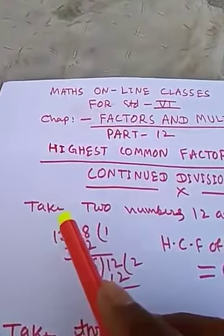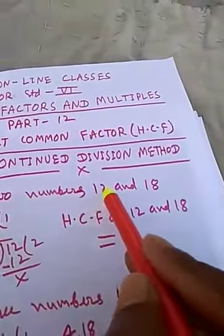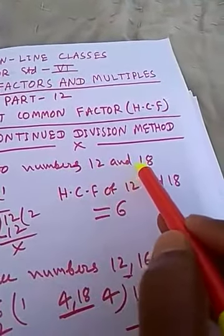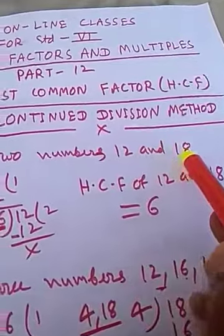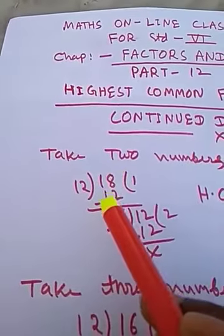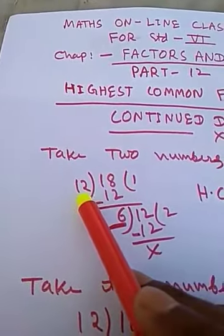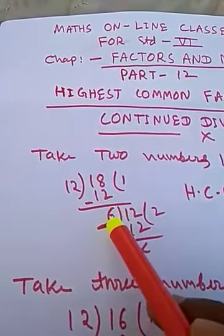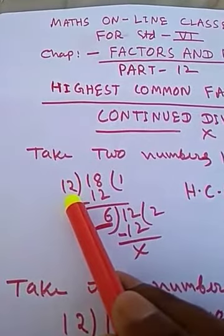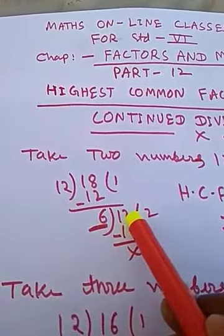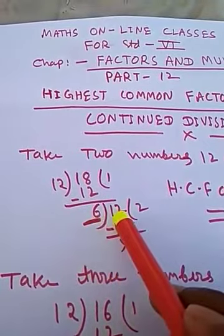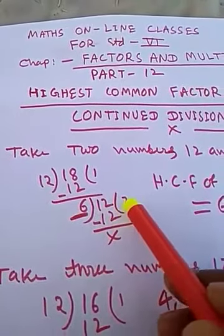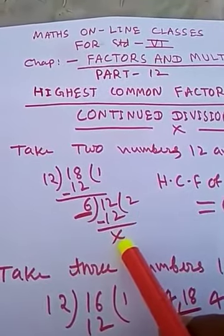Now we shall learn this method with an example. Take two numbers: 12 and 18. We have to find the HCF of 12 and 18. Here, 18 divided by 12 gives a remainder of 6. Now 6 will divide the divisor, which is 12.